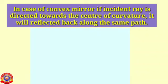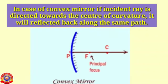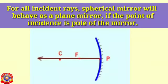In the case of a convex mirror, if an incident ray is directed towards the center of curvature, it will be reflected back along the same path. Rule number four: for all incident rays, a spherical mirror will behave as a plane mirror if the point of incidence is the pole of the mirror.